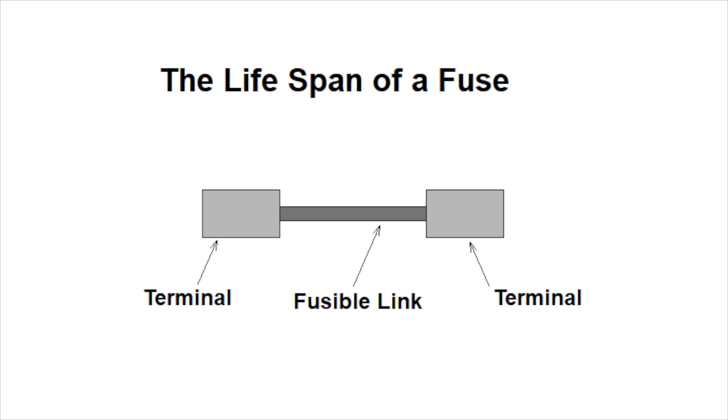A fuse is simply a fusible link that melts and separates when the current flow exceeds a specified amount. When a fuse is operated within its rating it simply acts as a path for the current to flow through it.